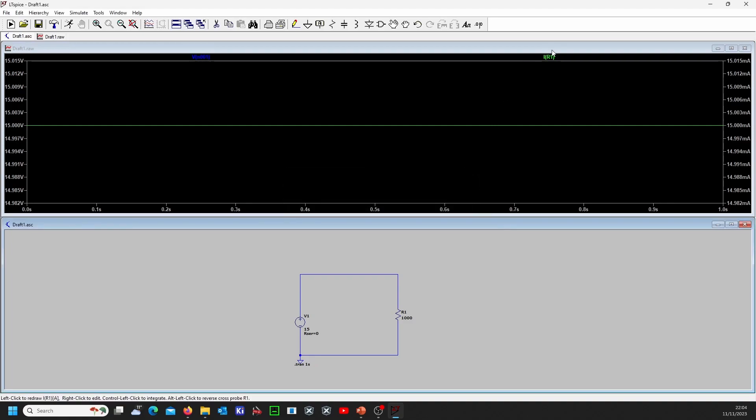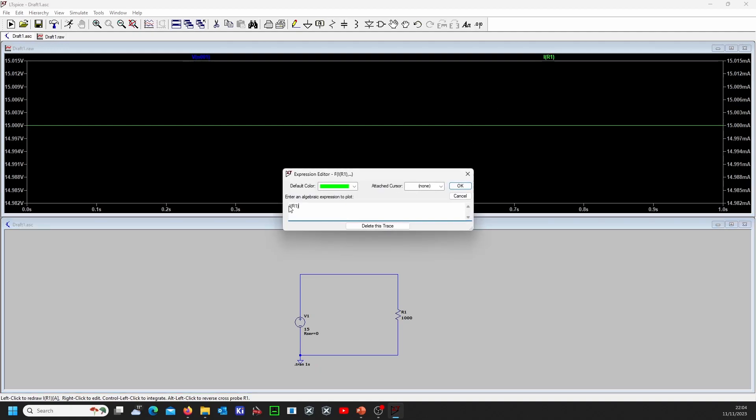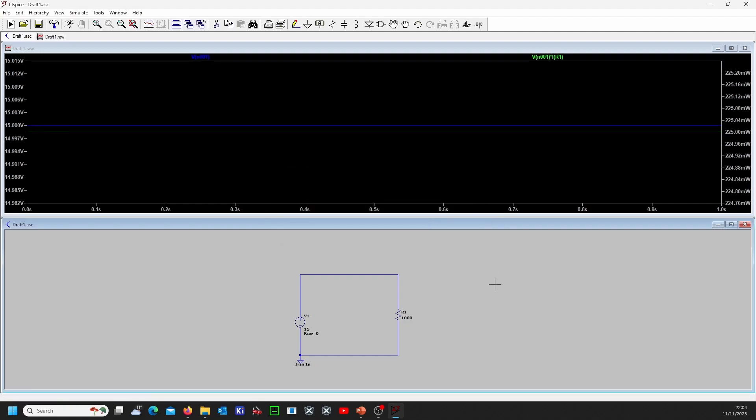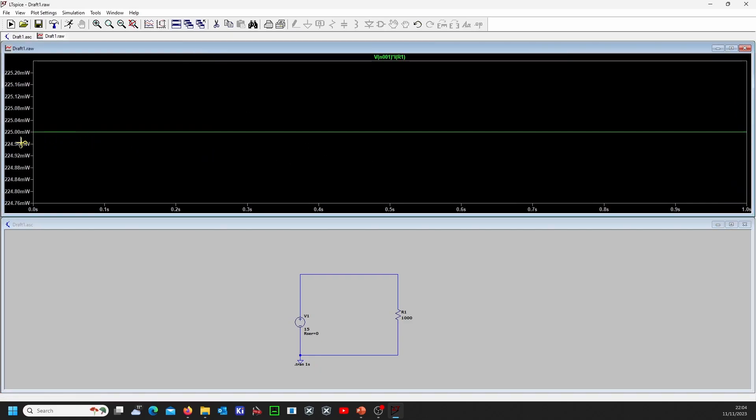What I can do is the power dissipation equals P times V times I, so I will do the voltage across the resistor and the current through the resistor which gives you the power. This shows you that it is 225 milliwatts.